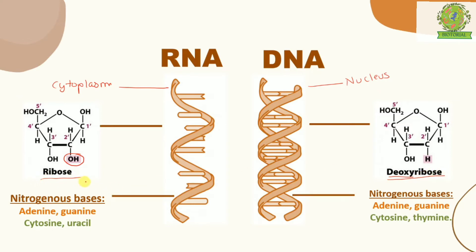Regarding nitrogenous bases: for RNA, we have adenine and guanine as purines, and cytosine and uracil as pyrimidines. For DNA, the nitrogenous bases are adenine, guanine, cytosine, and thymine — thymine replaces uracil in DNA. These are the three major differences between RNA and DNA.